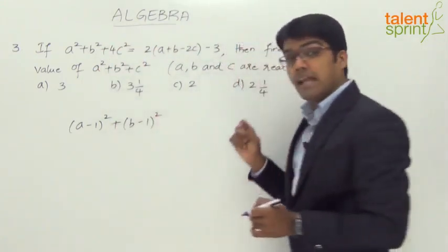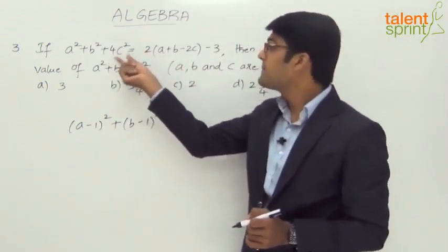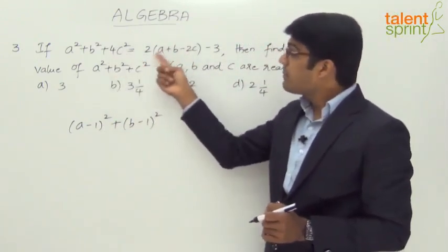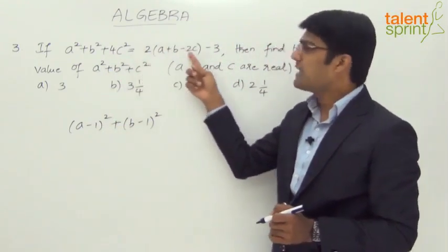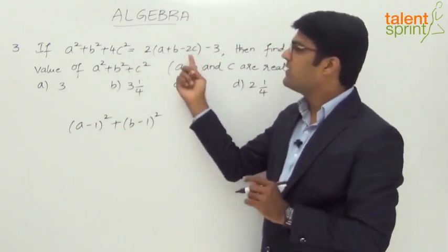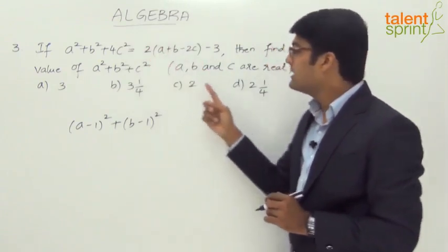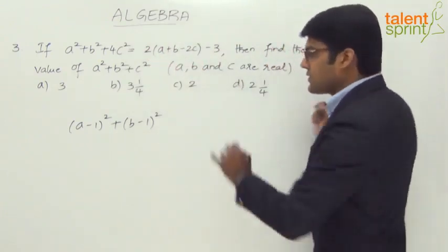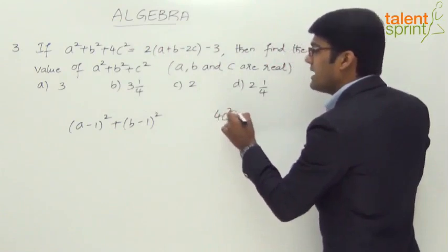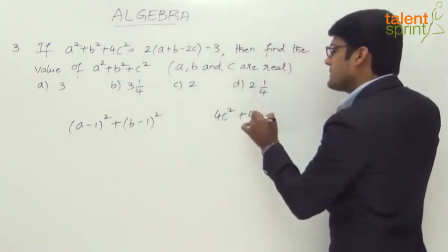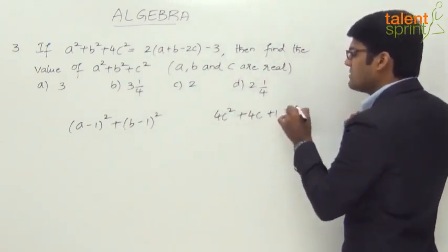Now look at the third part here: 4c² plus 4c. This is 2 times minus 2c which is minus 4c, but when you take to the other side it becomes plus 4c plus 1. So we have 4c² + 4c + 1 = 0.